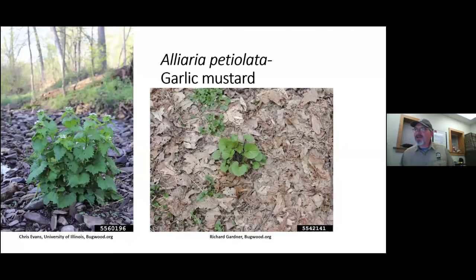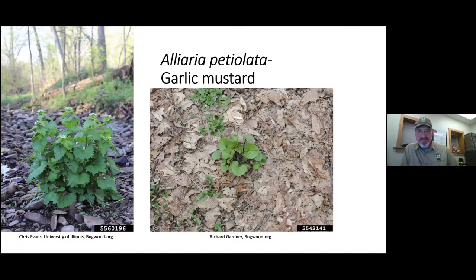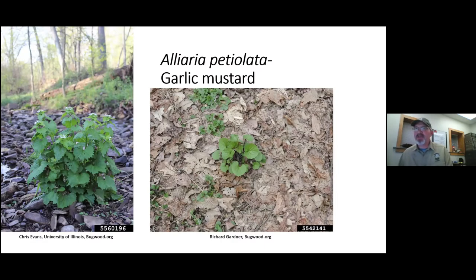Quickly after lesser celandine we move into garlic mustard season, which has been a great topic over the last 20 to 25 years. This plant is a biennial — it completes its life cycle in just two years. In the first year it's a smaller rosette, low to the ground with just a few leaves. In the second year the plant bolts, sets blossoms, produces seed, and then dies. The problem is it produces a lot of seed.